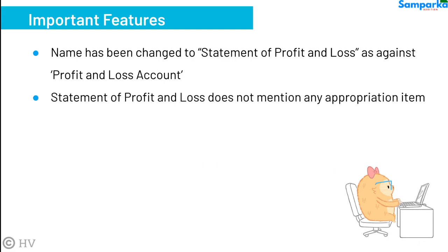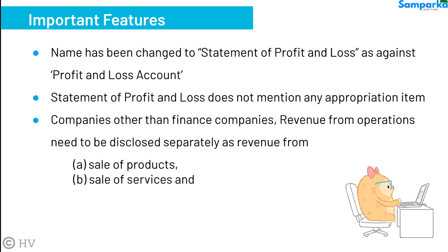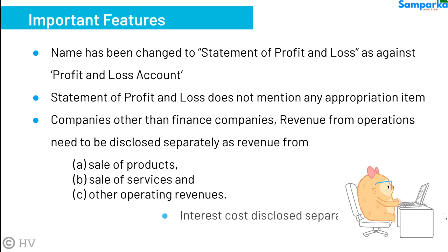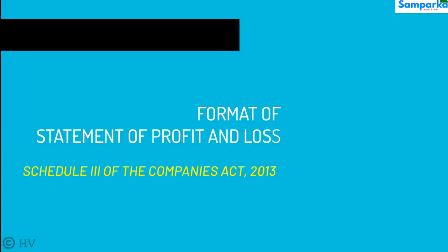Statement of profit and loss does not mention any appropriation item. For companies other than finance companies, revenue from operations needs to be disclosed separately as revenue from sale of products, sale of services, and other operating revenues. Interest cost is disclosed separately as finance cost. The format of statement of profit and loss is as per Schedule III of the Companies Act 2013.